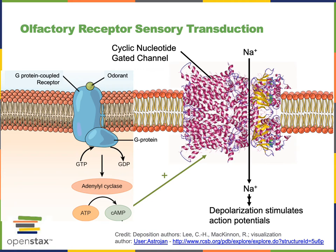As the cyclic AMP concentration of the cytosol increases, cyclic AMP will bind to a cyclic nucleotide gated ion channel, stimulating the opening of that ion channel which enables sodium to enter the cell. This sodium influx causes depolarization that stimulates action potentials in the olfactory receptor neuron.